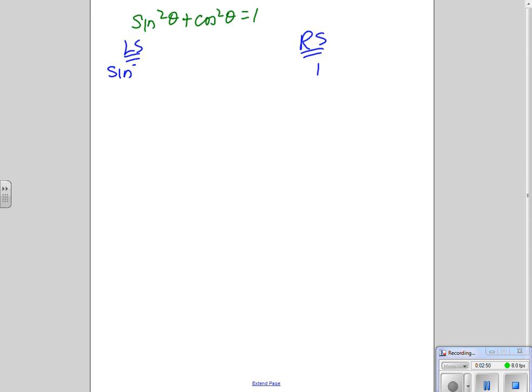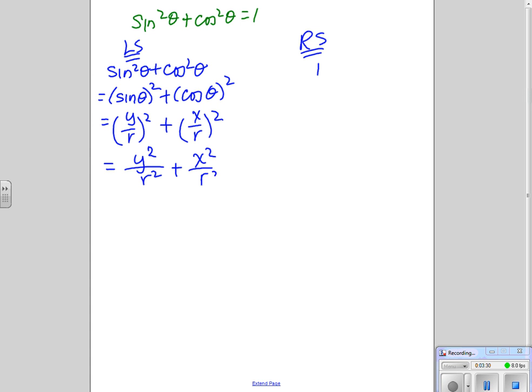Sine squared theta plus cos squared theta, and I'm going to replace sine squared theta, which is the same, by the way, if you write it sine theta squared. It's just the notation that they use, so you know it's the entire ratio sine theta that's being squared. I know sine theta is y over r. And cos theta is x over r. So let's tidy up y squared over r squared. I have a common denominator. y squared plus x squared over r squared.